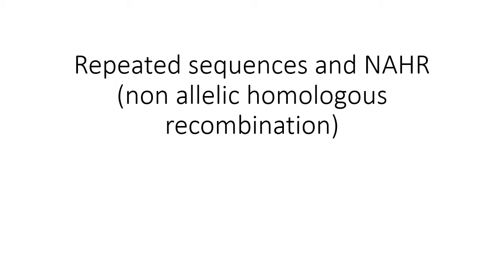Today we're going to continue talking about non-allelic homologous recombination as it occurs between repeated sequences in our genome. Our first example will be globins, but we will also see some others.